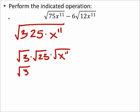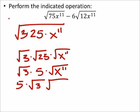So, this is the square root of 3 times 5 times the square root of x to the 11th. So, we can change this to 5 times the square root of 3. x to the 11th, well, I'm going to change that to the square root of x to the power of 10 times x to the power of 1.